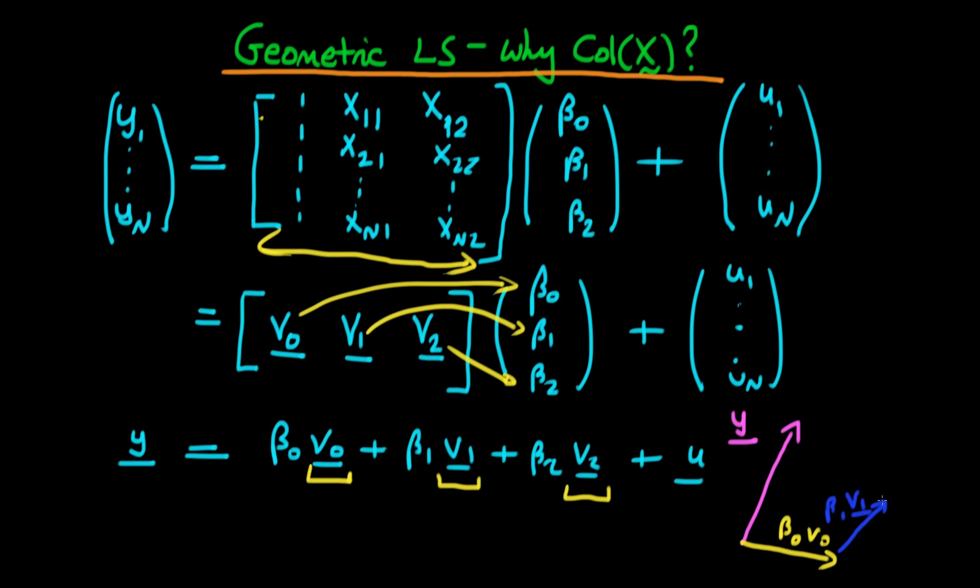And then finally, we've got some other vector, and obviously this is in more dimensional space than I can actually draw, which is V2. And we go beta 2 times V2 along that.